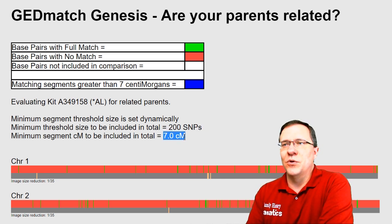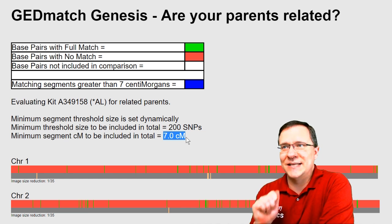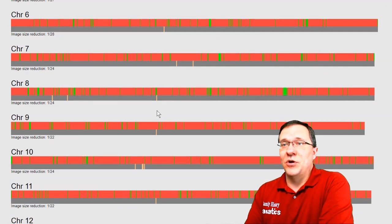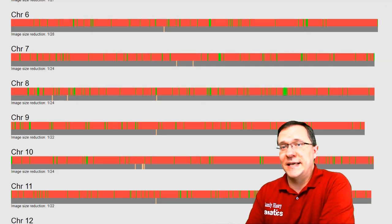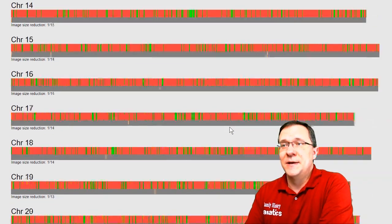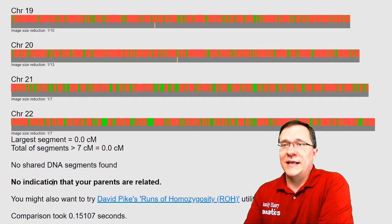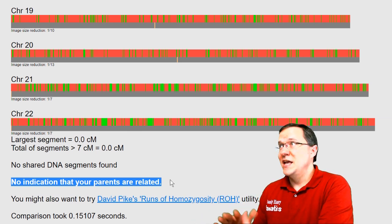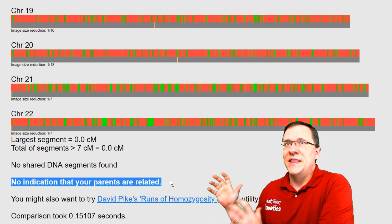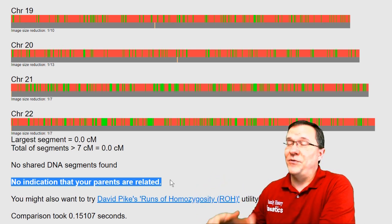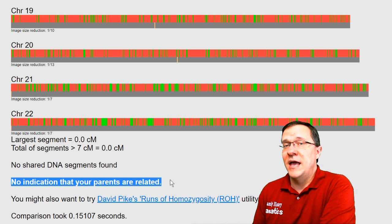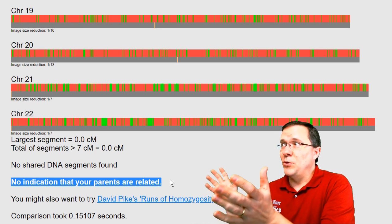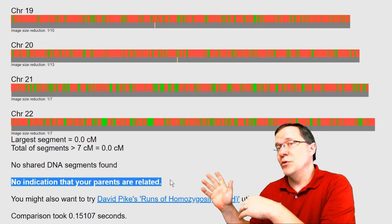It's also looking for that segment to be at least seven centimorgans long. It gives a map for each one of my chromosomes, and you can see there are some places where it's green indicating that it is the same for a little bit of a distance, but overall at the bottom it says there's no indication that my parents are related — meaning in the last five to seven generations they probably don't share any common ancestors.